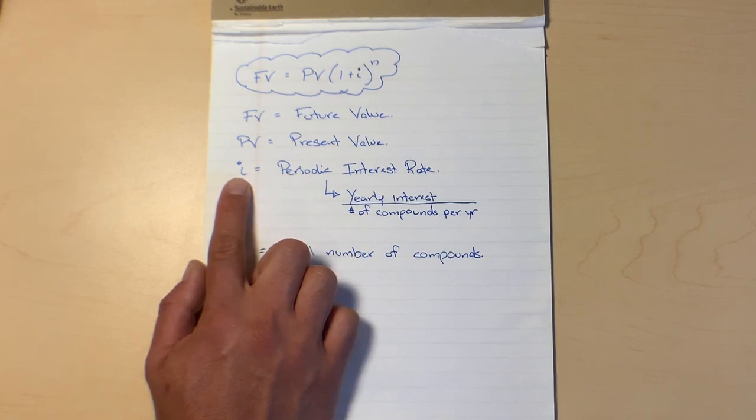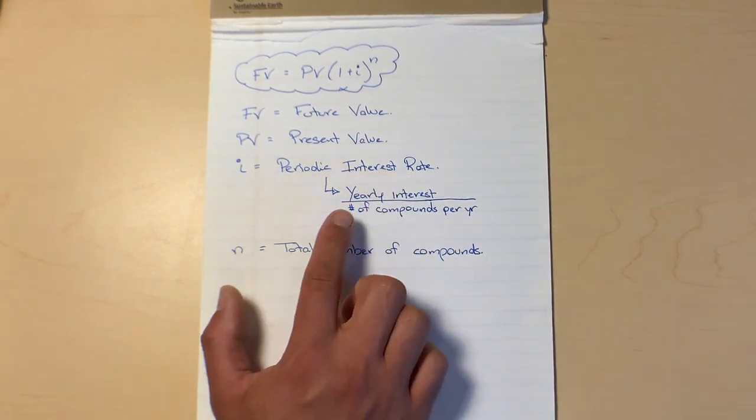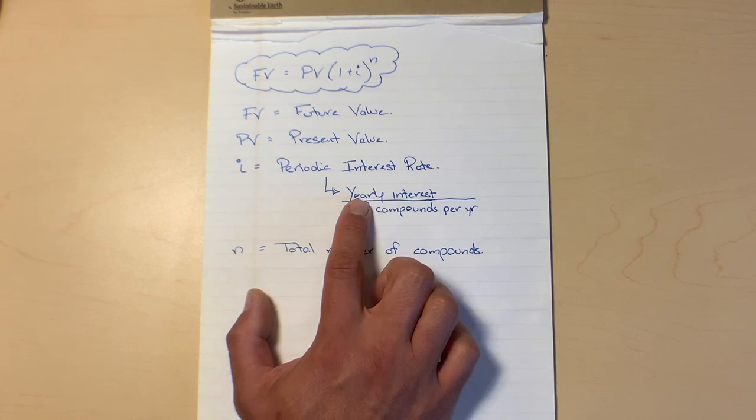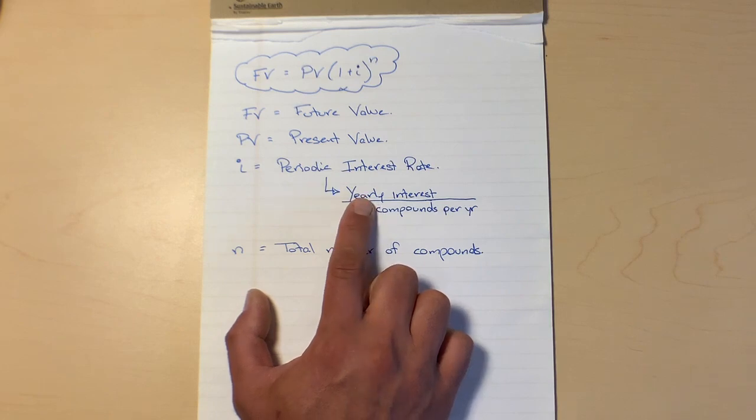I, we always think, everyone thinks i is interest. It's like yeah kind of. I stands for our periodic interest rate. So that's the yearly interest rate divided by the number of calculations we're going to do in a year. So let's say we're doing calculations every month. That means we have monthly compounding. So if our yearly interest rate is 12% and we have compounds every month, we're going to take 12% divided by 12 compounds in a year and that's going to give us an i of one percent.